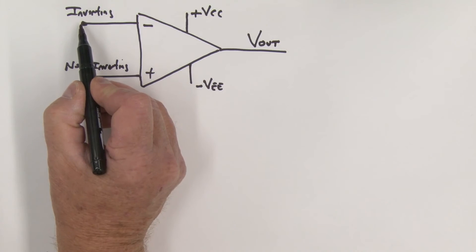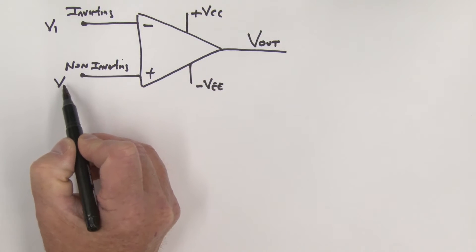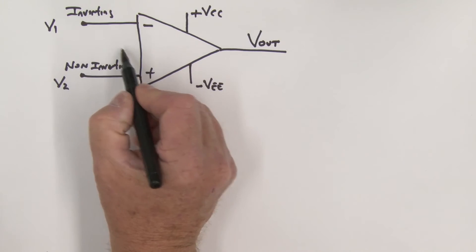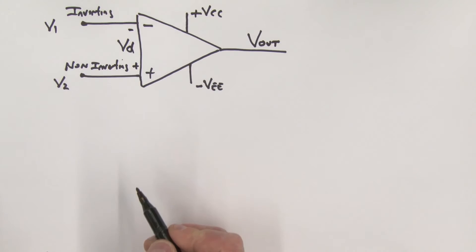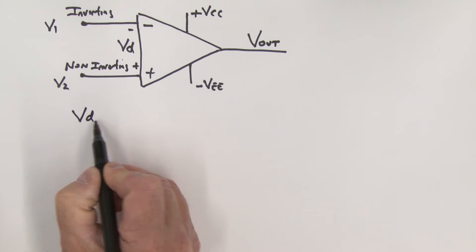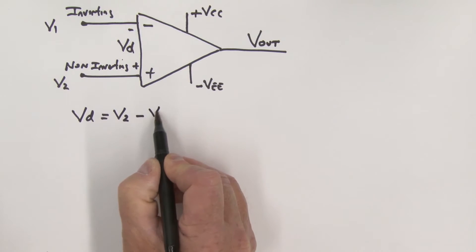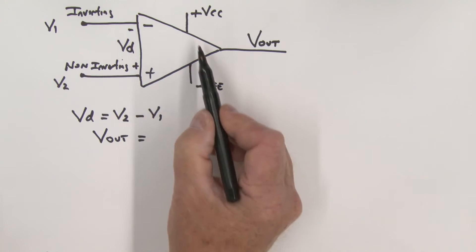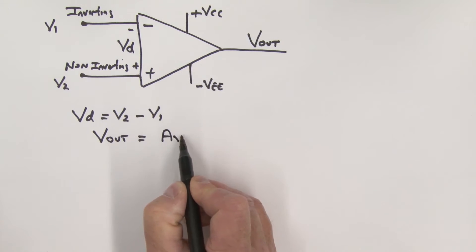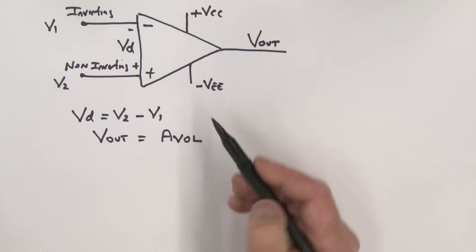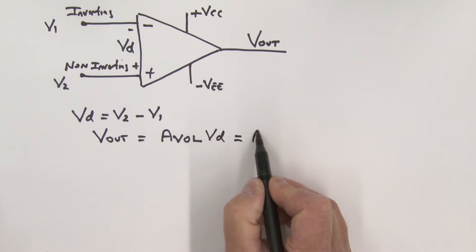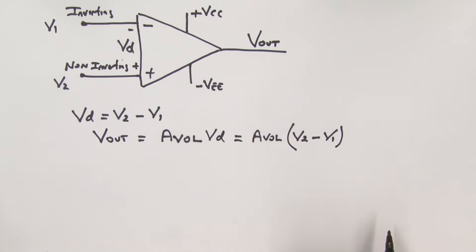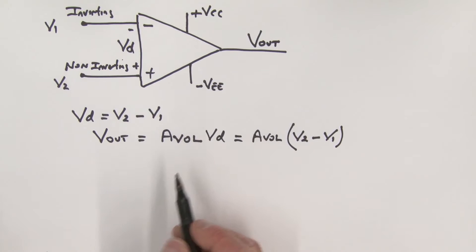We'll call this voltage V1 and this voltage V2. The voltage between those two input terminals is the difference between V1 and V2, which we define as VD. So VD is simply equal to V2 minus V1. The output voltage V_out is equal to the open-loop gain AVOL times VD, or equivalently AVOL times (V2 minus V1).